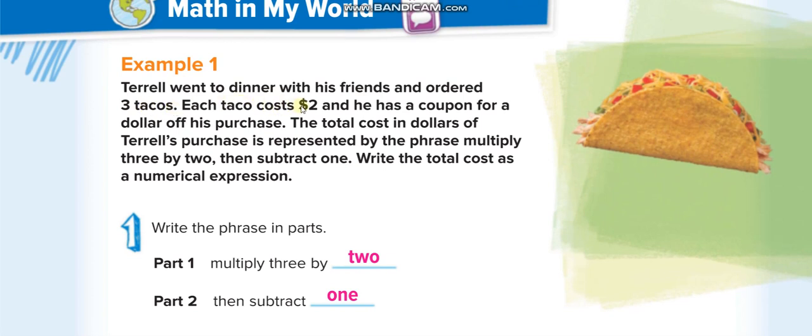Each taco cost two dollars. He ordered three tacos and each one cost two dollars, so to find the cost, three times two. So multiply. The first part is multiply three by two. And then he has a coupon for a dollar off.